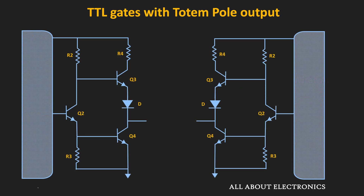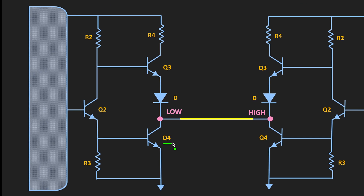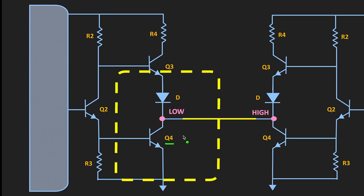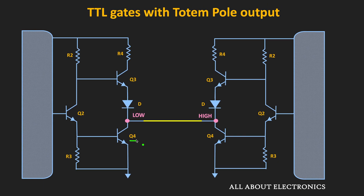Let's say we have two TTL logic gates with totem pole outputs and their outputs are connected together. The main issue arises when both outputs are at different logic levels. Let's say one output is at logic low while the other is at logic high. In the gate with logic low output, Q4 will be in the ON condition while Q3 will be OFF. For the second gate with logic high output, Q4 is OFF while Q3 is ON.